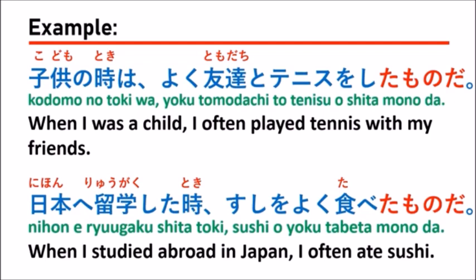I hope you understand how to use the grammar たものだ. It is used to explain situations that happened in the past — with anyone or anything you want to describe. When you want to talk about the past or express the feelings of a past situation, use this grammar. Remember: change the verb to past tense, then follow it with ものだ.